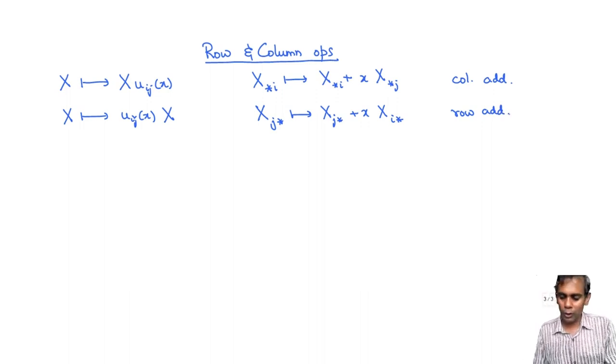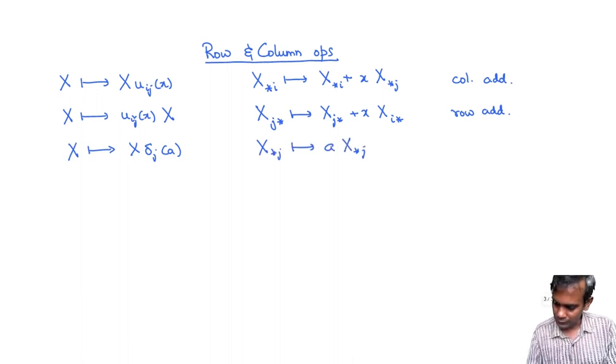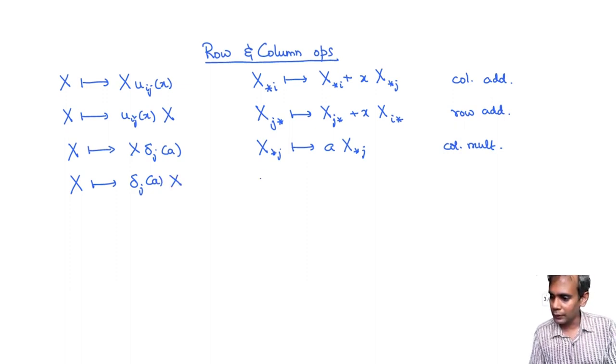So this is what the shears do upon left multiplication and right multiplication. And if you take x goes to x times delta_j(a) then this is just the same as taking the jth column of x and replacing it by a times the jth column of x. So this is column multiplication. And similarly if you do it on the left you will get delta_j(a) times x and what this will do is this will take the jth row of a and x and replace it by a times the jth row. So this is called row multiplication.